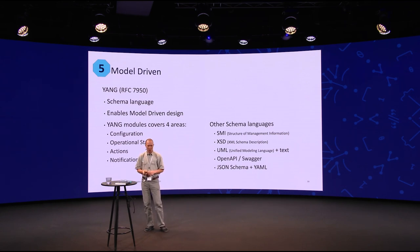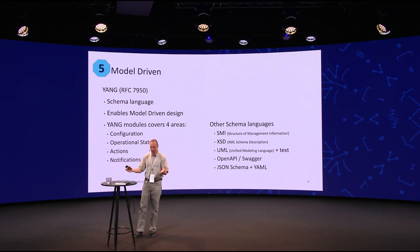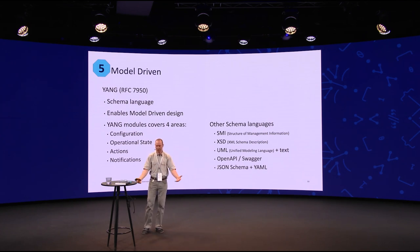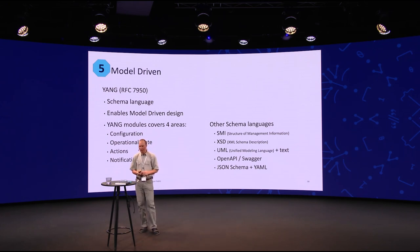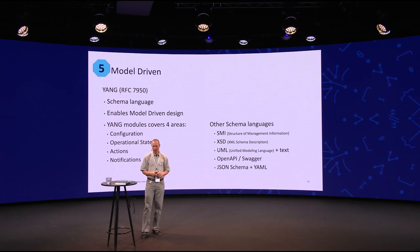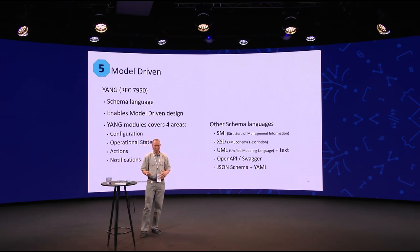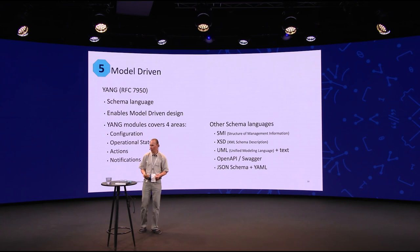The fifth cornerstone is being model driven. We have the Yang schema language that describes models — what you can do with your system. You have configurations you can create, the operational state you can query, actions you can execute, and notifications you may receive. So that's basically the API definition of a system. There are other schema languages — SMI from the SNMP world, XML schema descriptions, UML, OpenAPI or Swagger, JSON schema with YAML — but the point is, it's important to be able to reason about the system. You have to have a language to describe the API and understand what's going to happen when you execute operations towards the system.